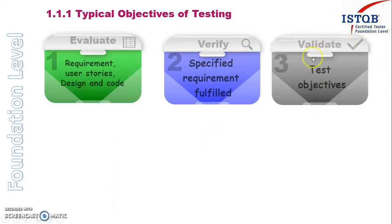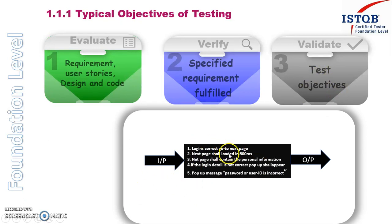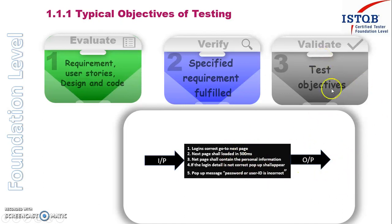The third stage is the validation stage. Here we check whether the test objective is fulfilled or not. We have got all the clarification from the customer and verified the documents and code. Now we have to see whether we are meeting the customer's expectation. We go to the webpage, provide the login details, and check whether the personal information page loads and whether that transaction happened within 500 milliseconds. We check the system as a whole, not each individual point. That is called the validation stage, which is our third objective.